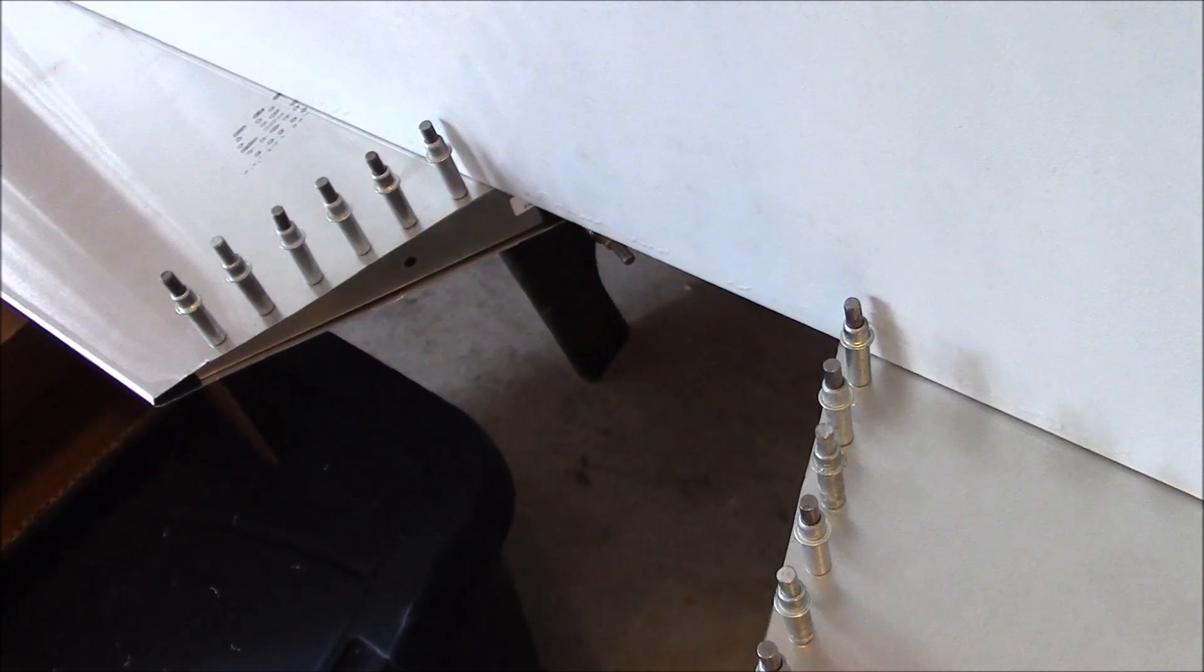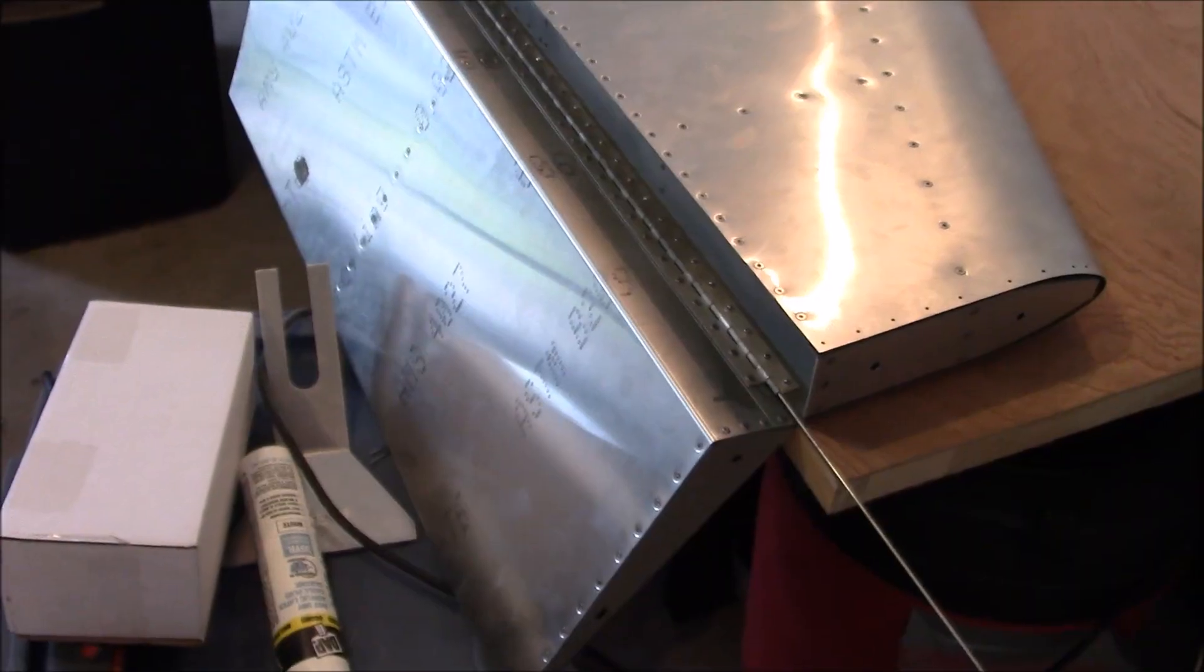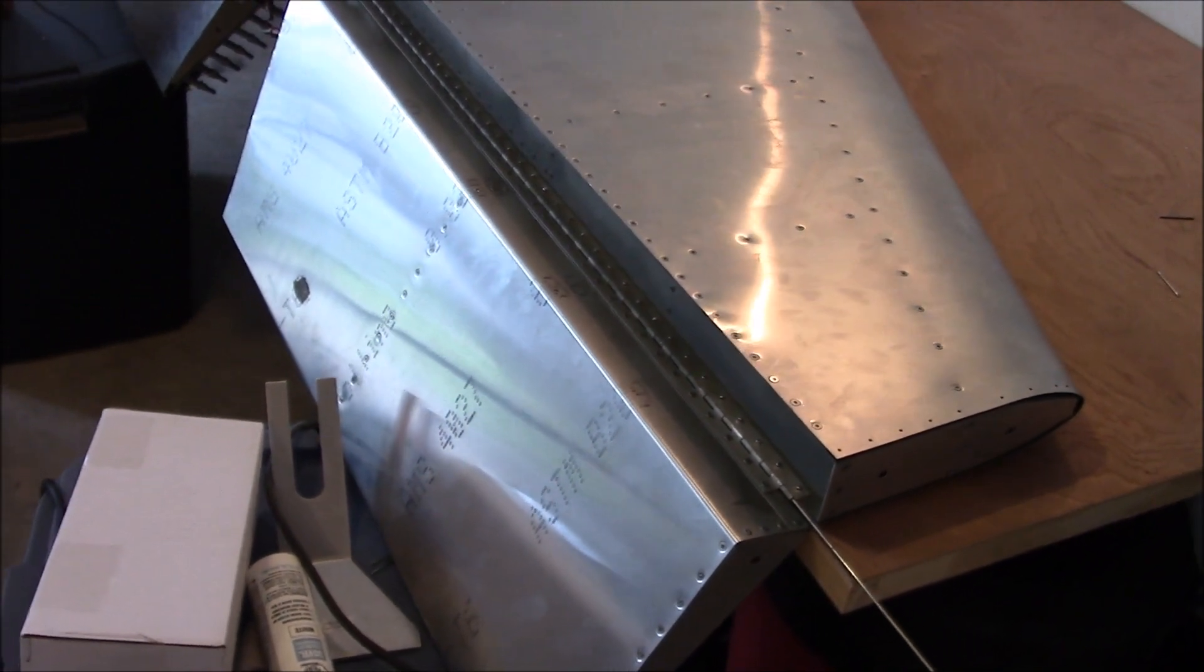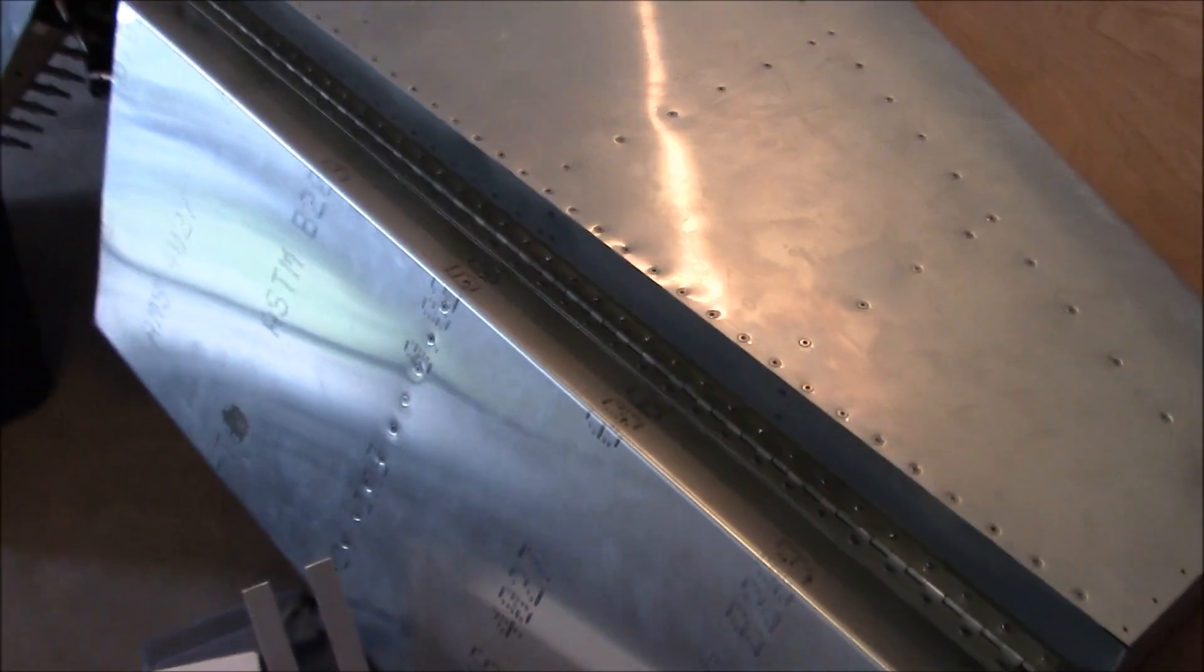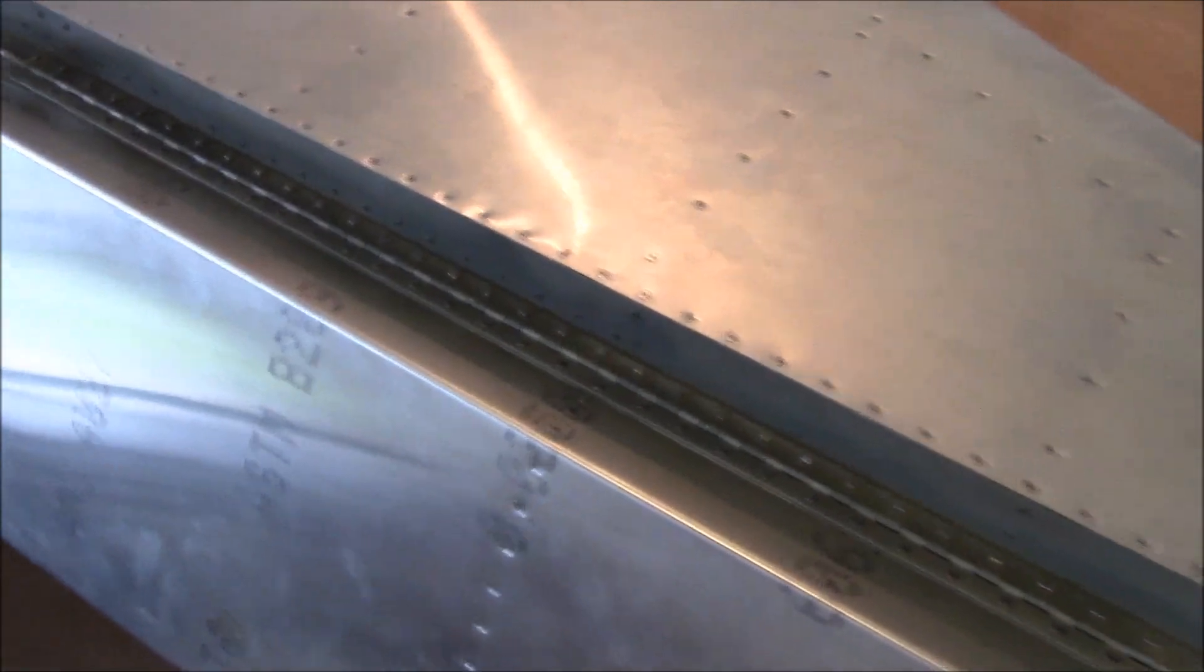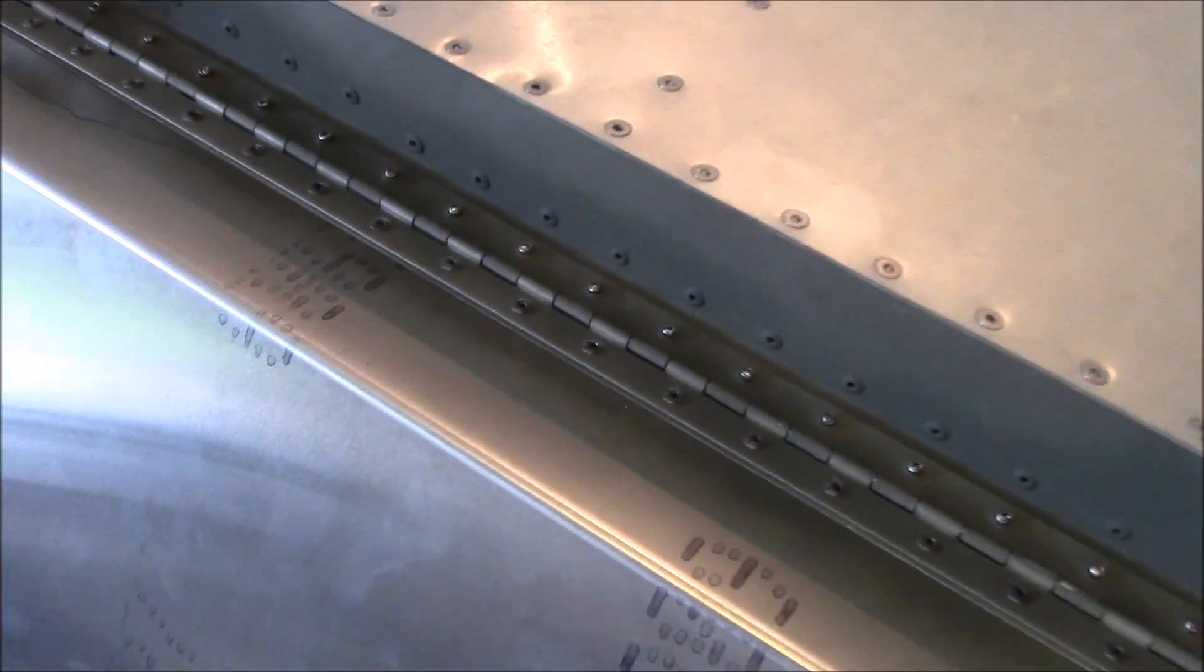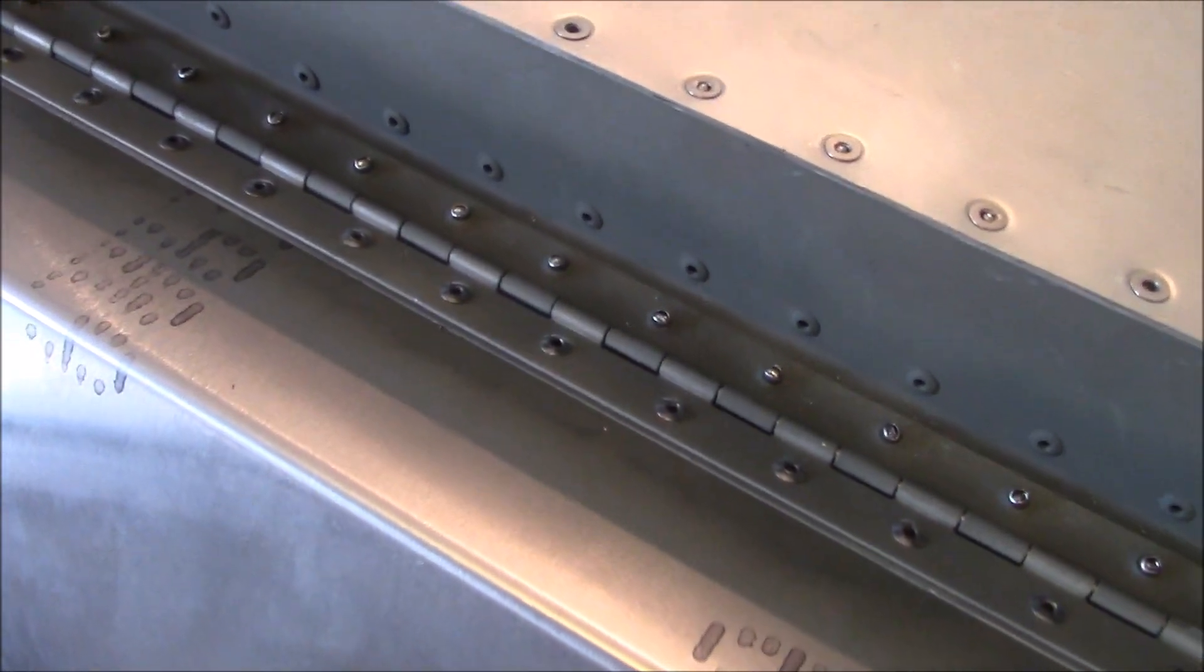Now I'm going to flip it over and keep working the other side. The elevator is upside down right now, which is kind of an unusual view. You usually see it with the hinge on top, but I want to show you what it looks like this way. You can see how the hinge goes across on each side.